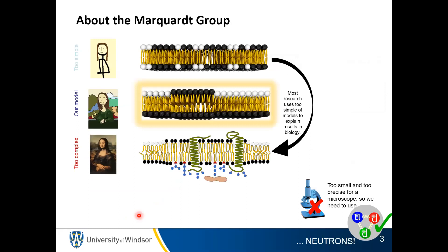The way my group approaches these membrane problems is we look for a good compromise between a complex system. The cell membrane itself is extremely complex — we're talking about hundreds to thousands of different biomolecules incorporated into this biological structure. This is too complex to investigate from a first-principles approach. You can go to the extreme and have too simple a system with only one or two lipids uniformly mixed, and this isn't overly representative either. So we look for a compromise between complexity and the ability to still tease out fundamental interactions.